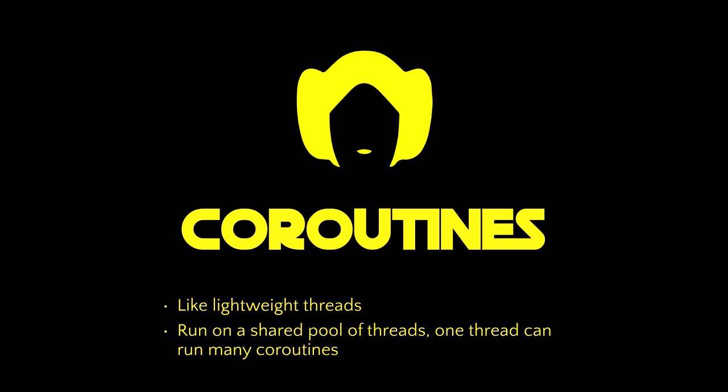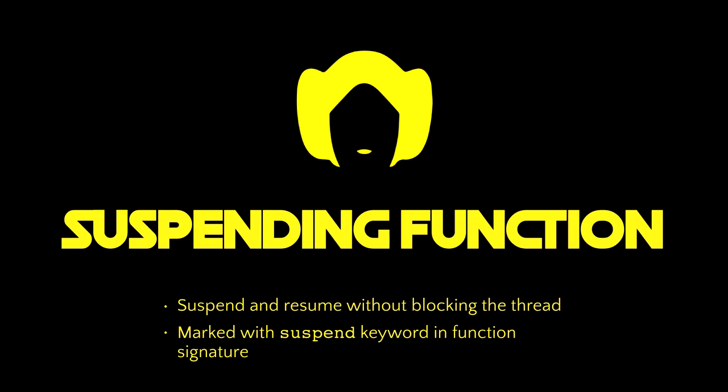To understand coroutines, we first have to understand the concept of suspending functions, where a function can suspend its computation at some point and resume later on without blocking the thread. This is key — super, super key — without blocking the thread. This means that the coroutine can give up the thread it's running on when it suspends, and it returns it to the pool for use by another coroutine.